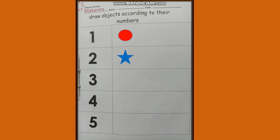Okay, one circle. For two, two stars. And three, three triangles.